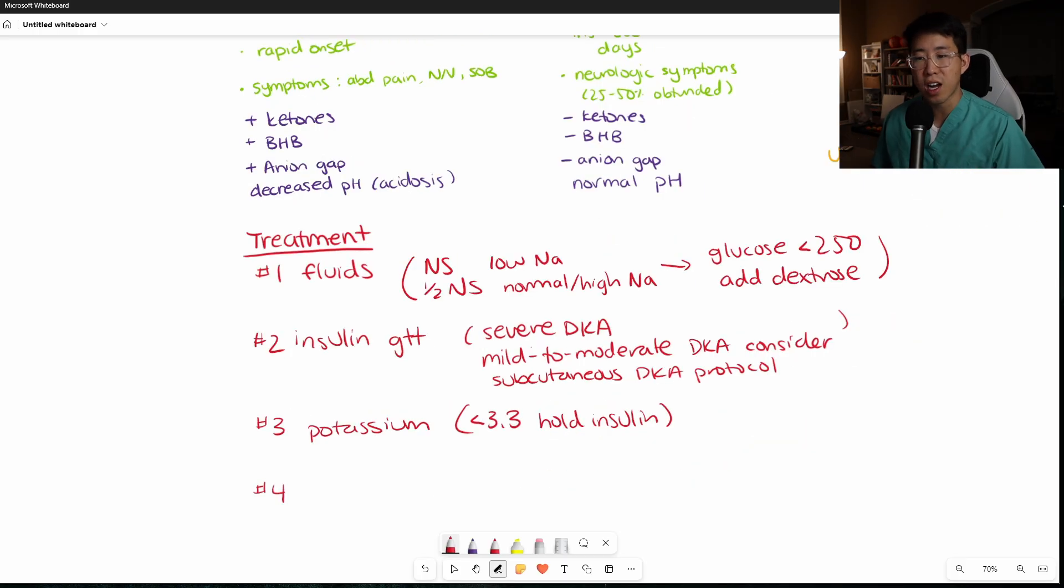Treatment number four, and this is not always used, but this is going to be bicarbonate. And this is really only if the patient's pH is less than 6.9, then you can start them on a bicarbonate drip. If their pH is above 6.9, it is not recommended to start a bicarb drip.